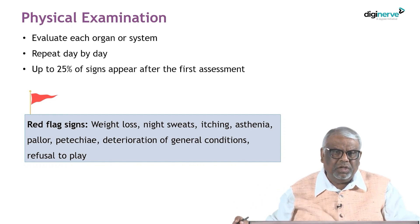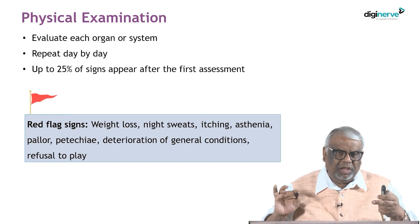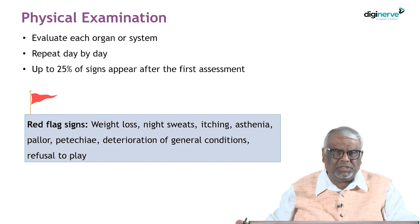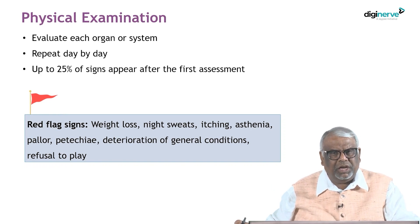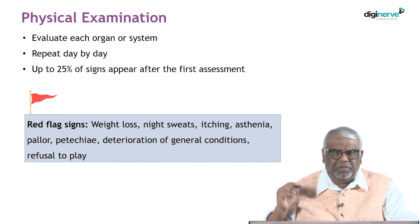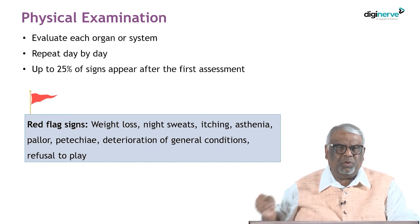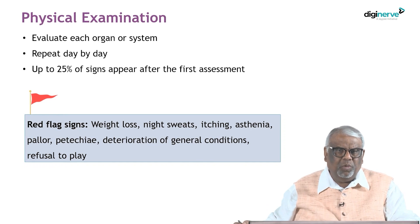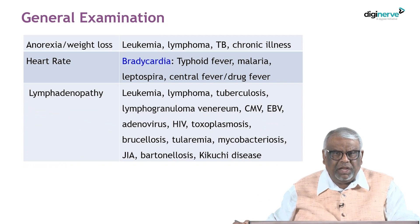Children with fever of unknown origin often develop telltale signs which you should be able to assess. There are red flag signs which typically point to certain illnesses: weight loss, night sweats, itching, severe weight loss, asthenia, thinness, pallor, petechiae, and refusal to play. Beware of these red flag signs, as these children need closer follow-up and monitoring to prevent complications.